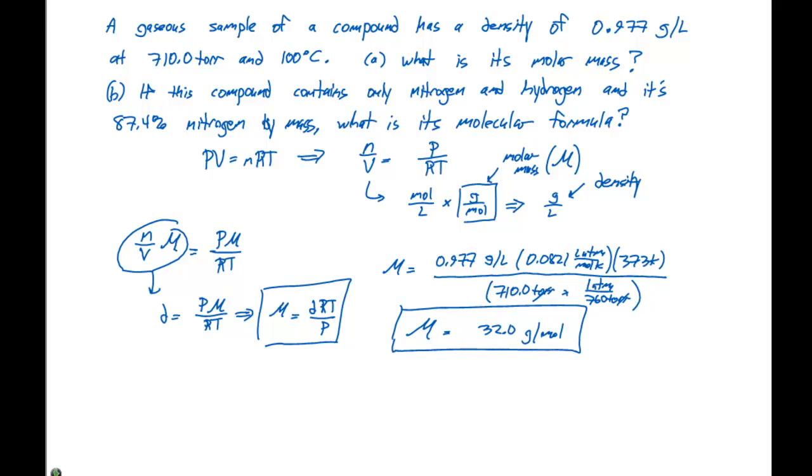That is the answer to part A. After we calculate the molar mass, we can move on to part B, which is if this compound contains only nitrogen and hydrogen and it's 87.4% nitrogen by mass, what is our molecular formula? First we need to figure out the empirical formula, then find our factor and determine the molecular formula.